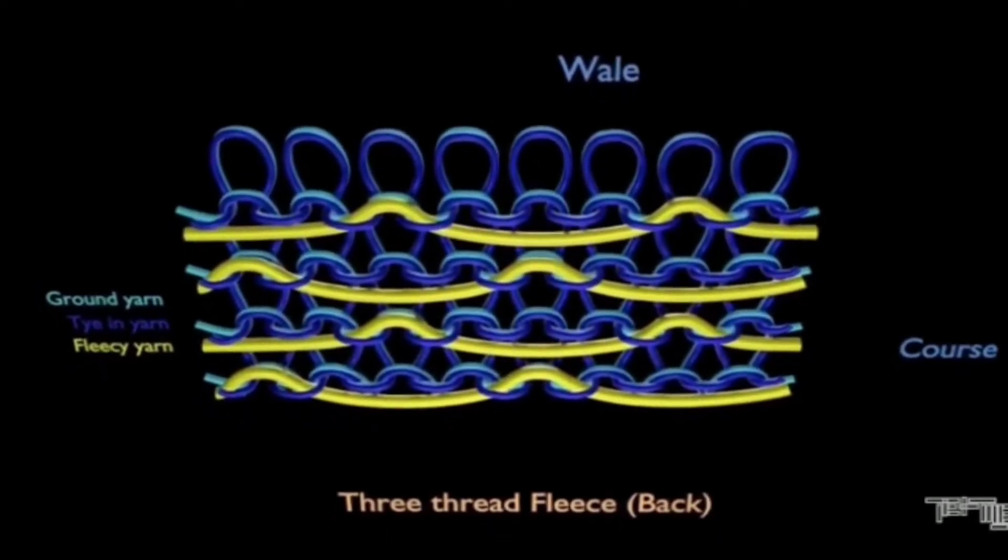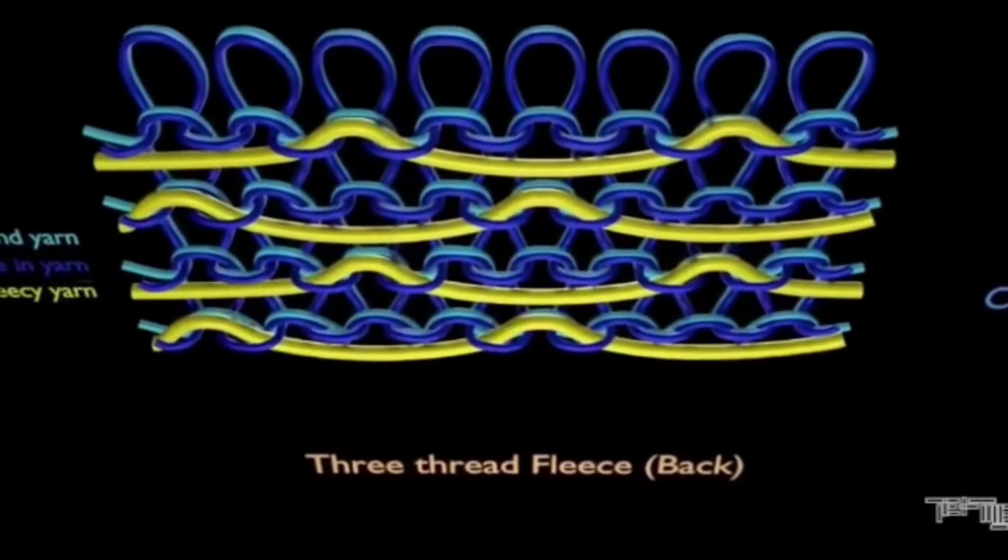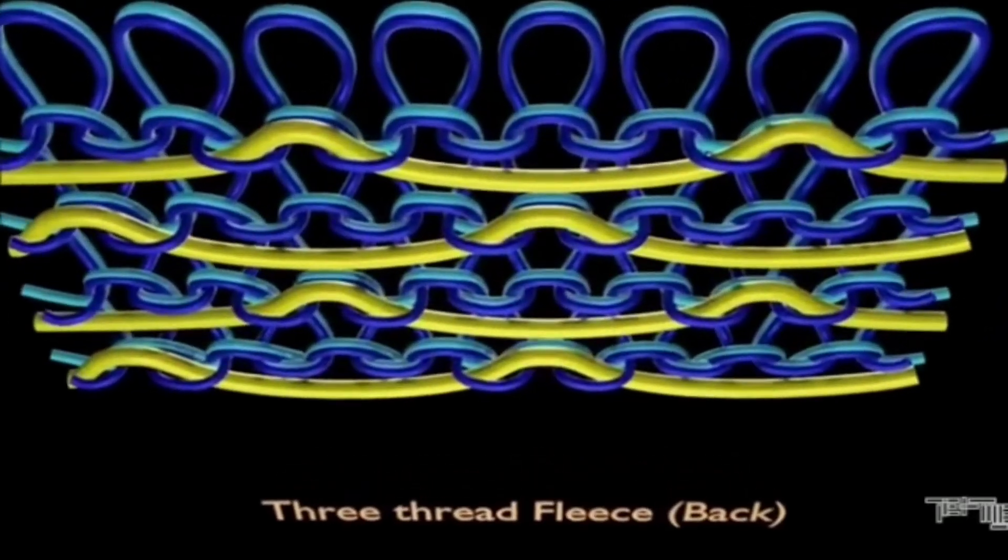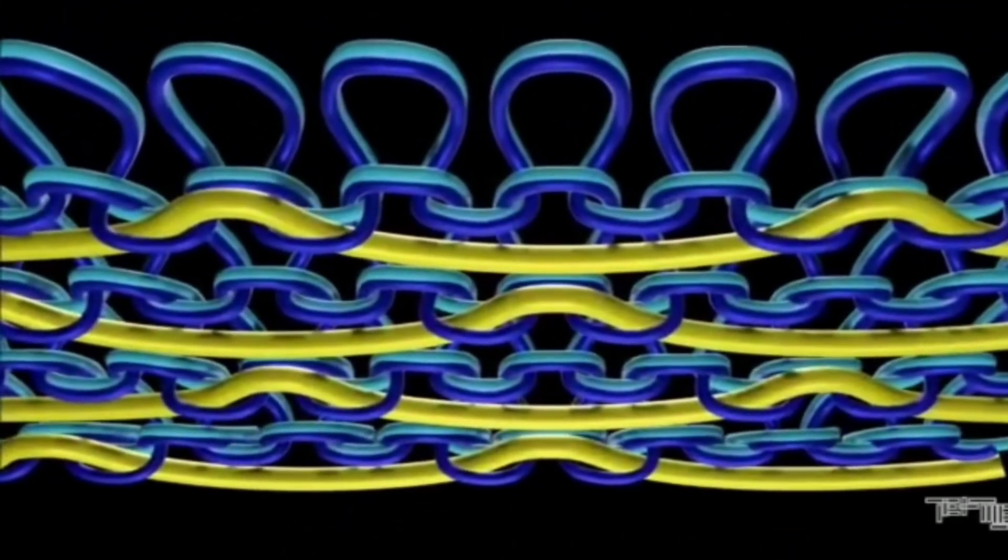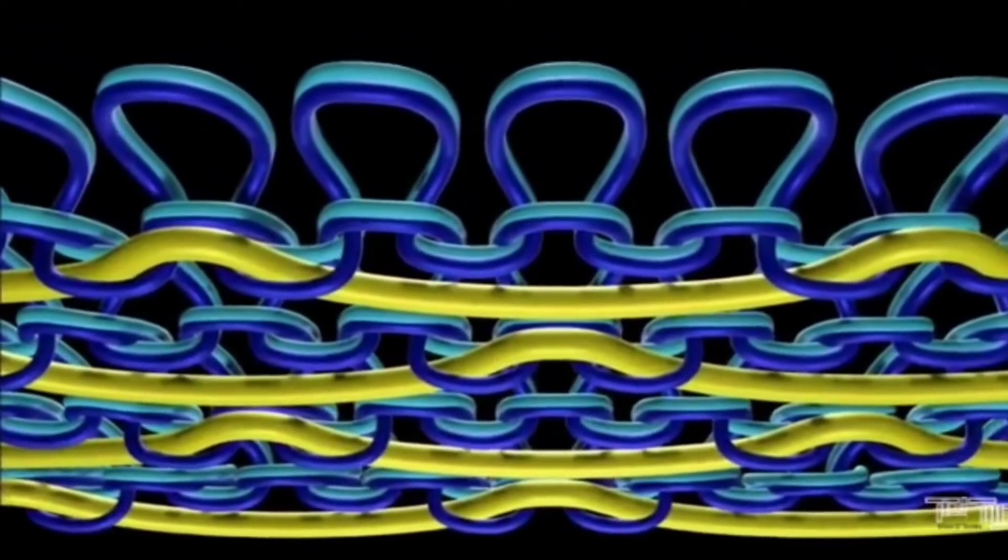The second and third yarns are the tie-in and ground yarns which are fed successively in a plating relationship and knitted so that the fleece yarn is caught at predetermined intervals between them.